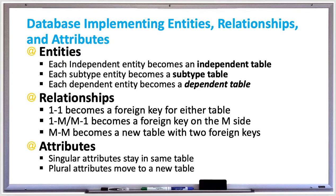A subtype entity becomes a subtype table and its primary key is the foreign key to the supertype's primary key. A foreign key implements the is-a relationship — the dependency relationship. Foreign keys that implement the dependency relationship usually have the following referential integrity actions: cascade on primary key update and delete.